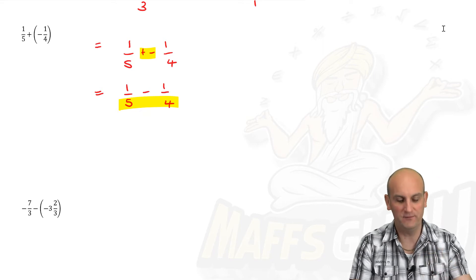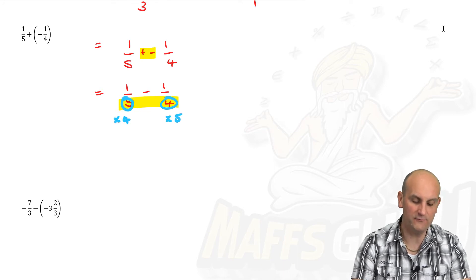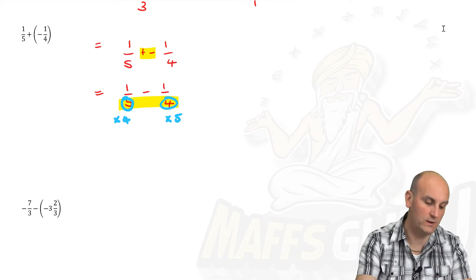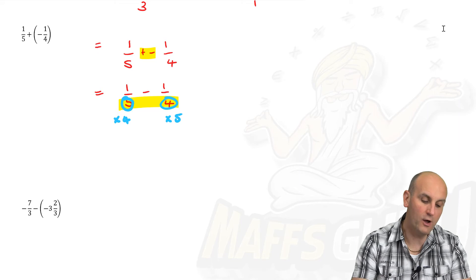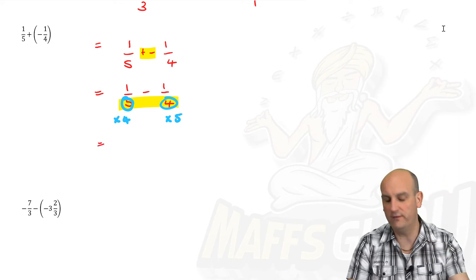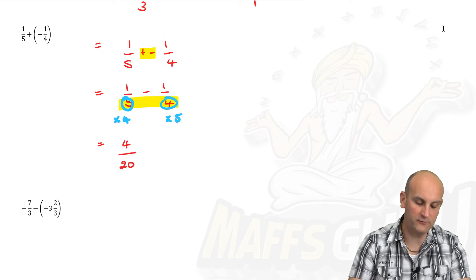Well, if you remember from that previous video, the easiest way to do it is to take this four here and times that fraction by four. We take this five here and times that fraction by five. And lo and behold, it just becomes a bit easier. Now we have to multiply the whole of that fraction by four. So when I multiply the whole of that fraction by four, the top becomes four and the bottom becomes 20.